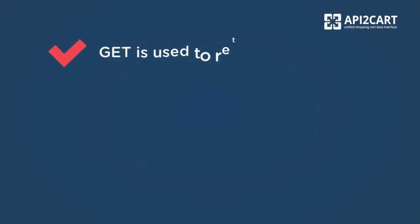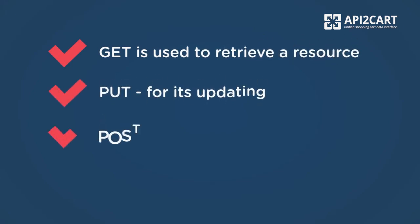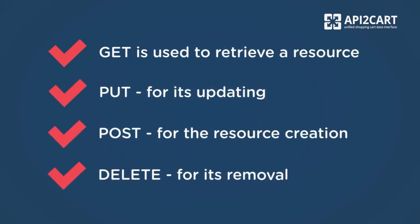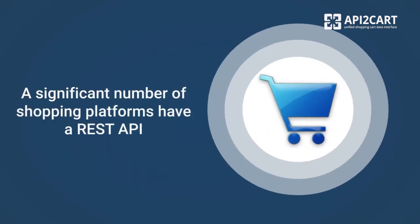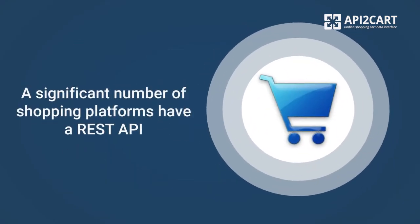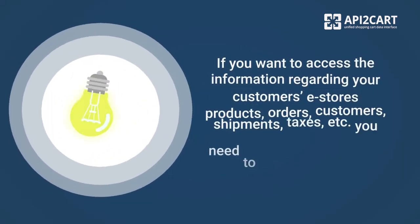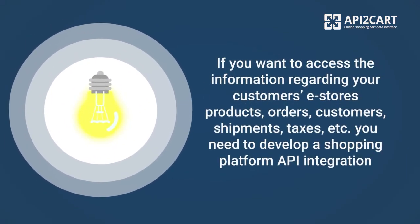GET is used to retrieve a resource, PUT for its updating, POST for the resource creation, and DELETE for its removal. A significant number of shopping platforms have a REST API. So, if you want to access the information regarding your customers' e-stores — products, orders, customers, shipments, taxes, etc. — you need to develop a shopping platform API integration.